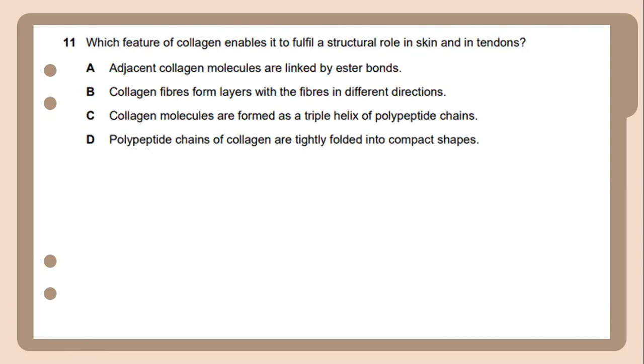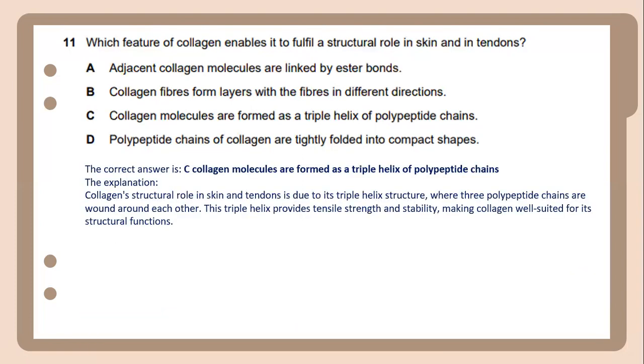Which features of collagen enable it to fulfill a structural role in skin and tendon? The correct answer is C. Collagen molecules are formed as a triple helix of polypeptide chains. This can be explained when the collagen structure found in skin and tendon is due to its triple helix structure where three polypeptide chains are wound around each other. This triple helix provides tensile strength and stability which makes collagen well suited for its structural function.